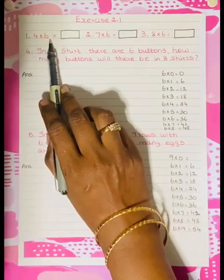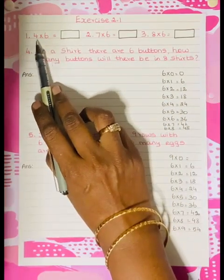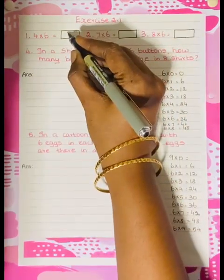See the first one: 4×6. That means 4 tables. What is 4×6? 4×6=24.